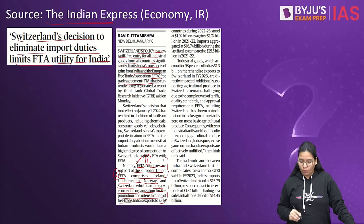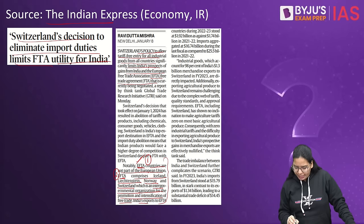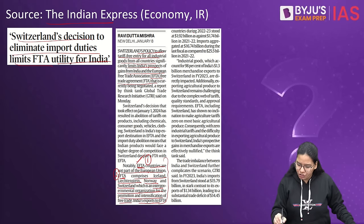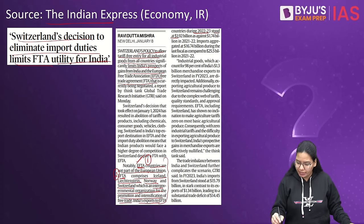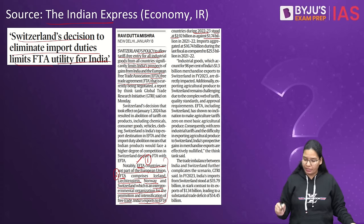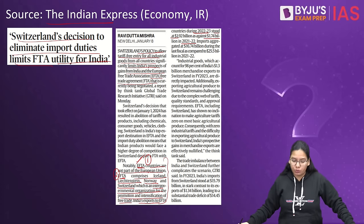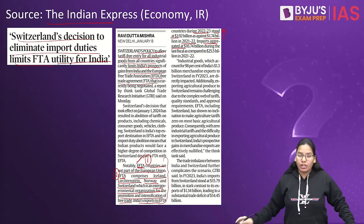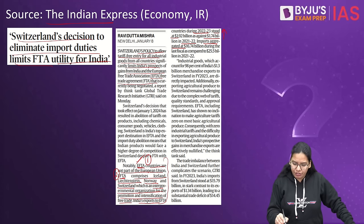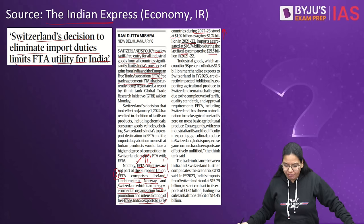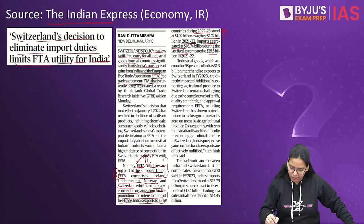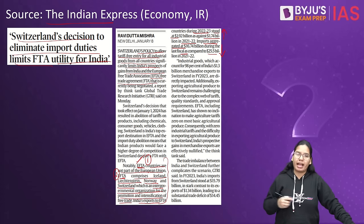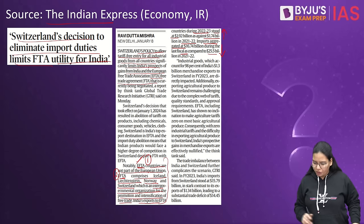Regarding India-EFTA trade relations: India's exports to EFTA countries during 2022-2023 stood at $1.92 billion, as against $1.74 billion in 2021-2022 — so exports have marginally increased. Imports aggregated at $16.74 billion during the last fiscal, compared to $25.5 billion in 2021 — so imports have decreased. Exports have increased but imports have decreased. This is all about EFTA.